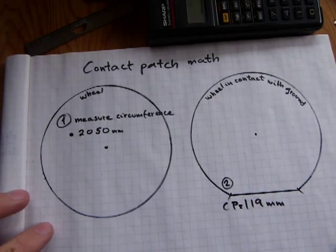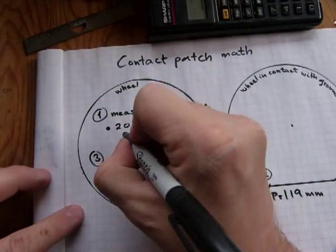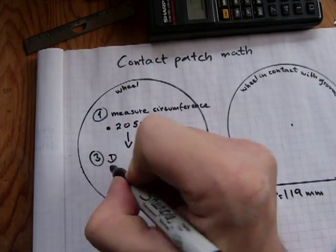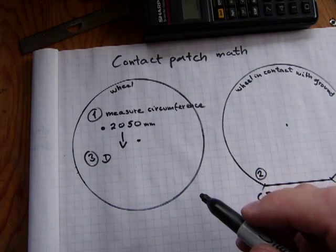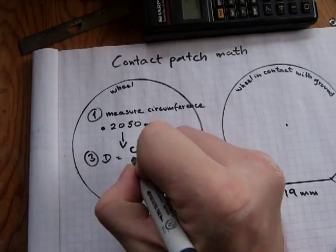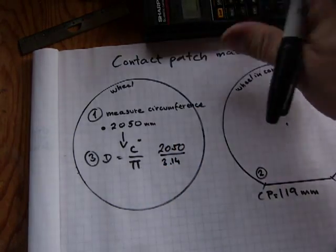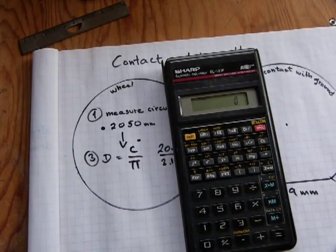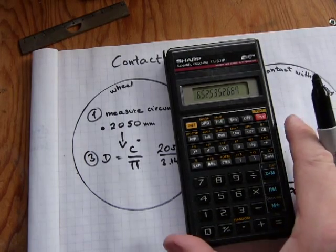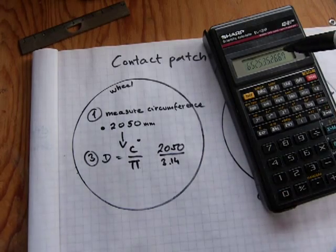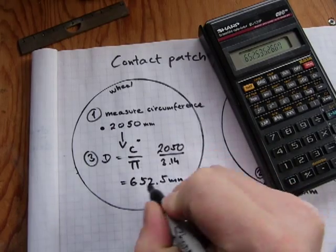Step three: from your measurements you have to calculate the diameter of the wheel. Don't try to measure it — just measure the circumference, then calculate the diameter by dividing the circumference by pi. So: 2050 divided by pi equals 652 millimeters plus change. Leave all the digits on the calculator — I'll write down 652.5 millimeters for the diameter of the wheel; that's about two feet and a little bit.